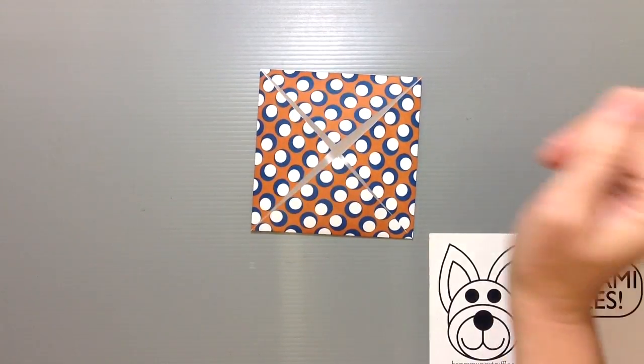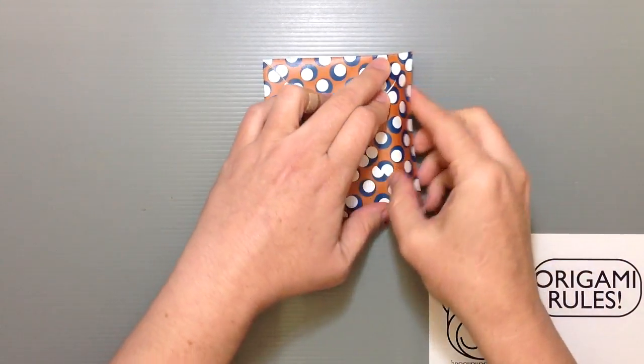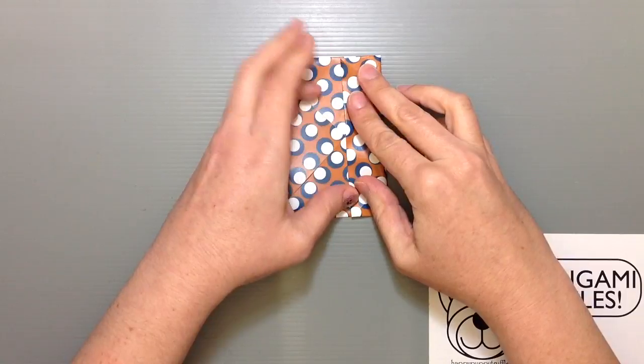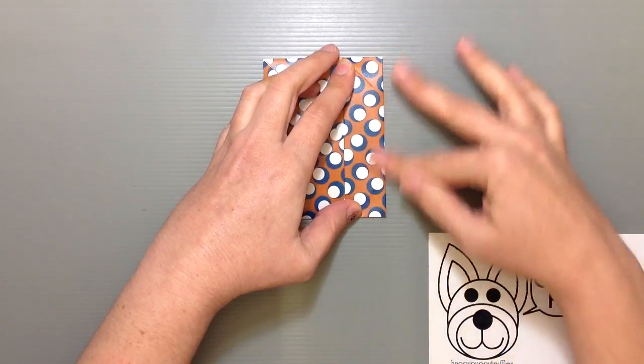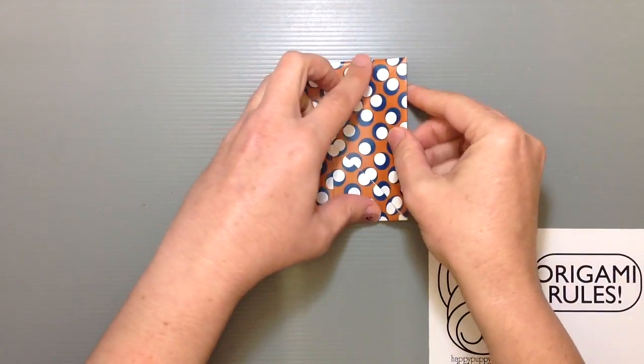Once you've gotten all four corners in the center, go ahead and take one of these sides and fold it into the middle, and then fold from the other side too.